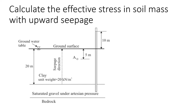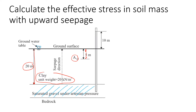This is a very good example in which we are required to calculate the effective stress at point A, which is five meters below the ground surface, so this point is in the clay layer. The thickness of this clay layer is 20 meters. We have a ground water level right on the surface, and in addition there is a layer of gravel underneath the clay, and this layer is under artesian pressure. We know this because if we draw a piezometer and measure the water level, it will be 10 meters above the ground water level.